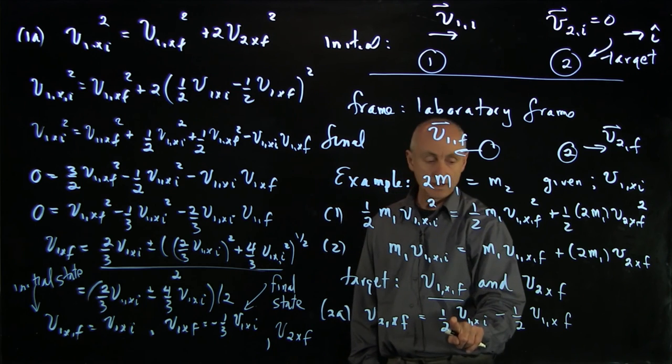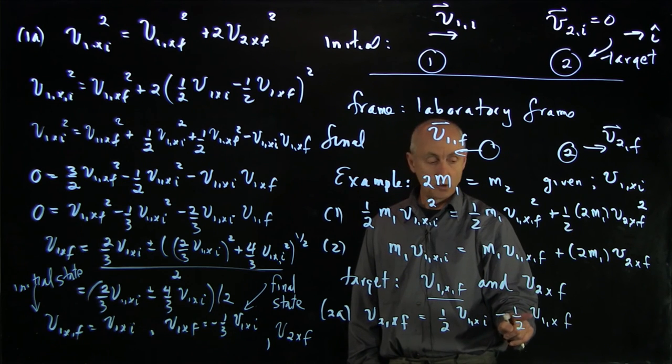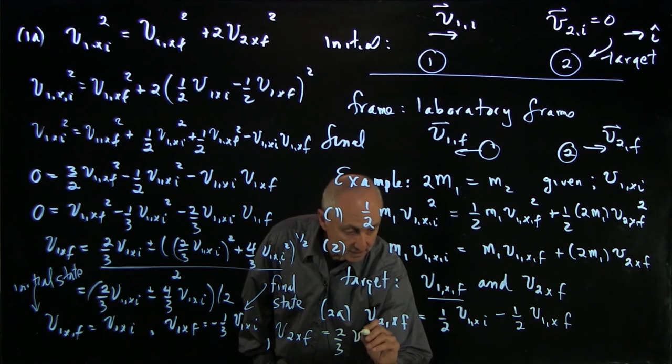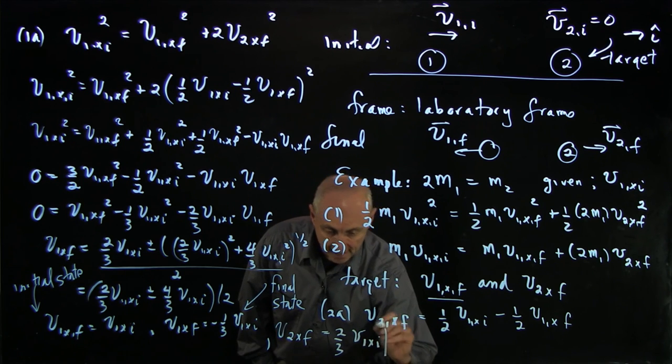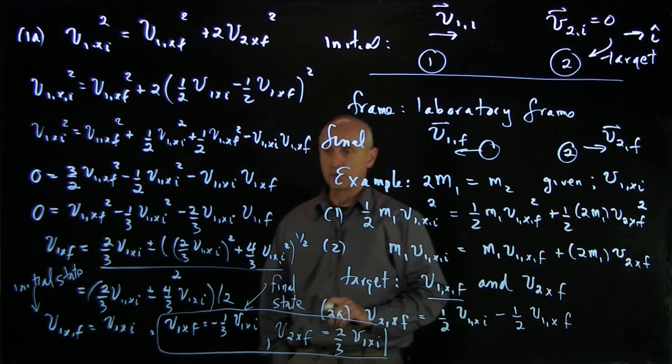So we have 1/2 minus 1/2 times minus 1/3. So that's 1/2 plus 1/6, which is 4/6 or 2/3 v1x initial. So that's 2/3 v1x initial. And that represents the solution to this particular problem.